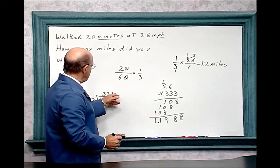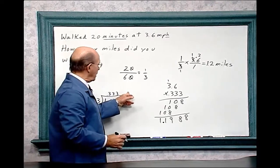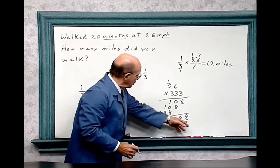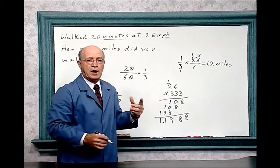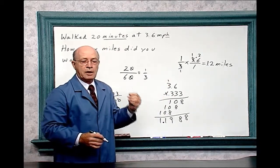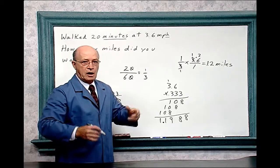Because this doesn't come out evenly, you have a longer number over here. But you can see it's the same thing. It's actually 1.2 miles if you walk 20 minutes on that treadmill.